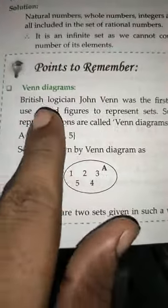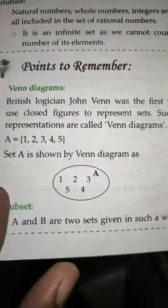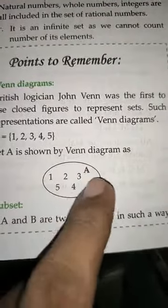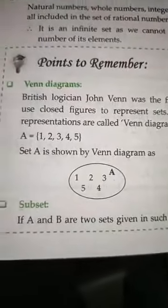If A is 1, 2, 3, 4, 5, we can make any geometrical figure in which we show that A contains 1, 2, 3, 4, 5. It's called a Venn Diagram.